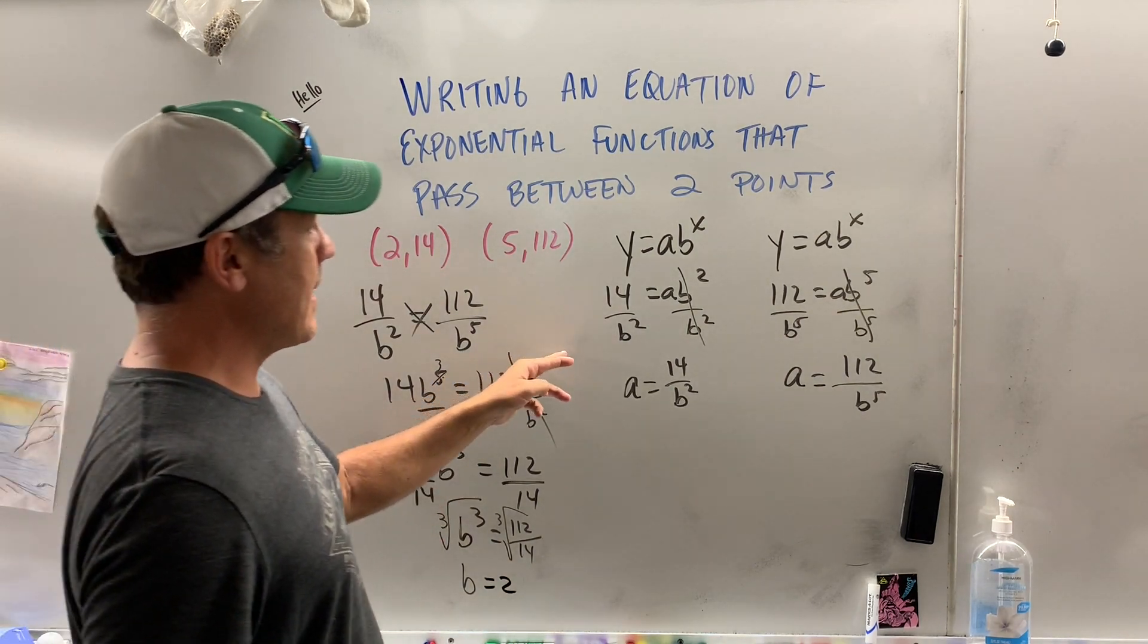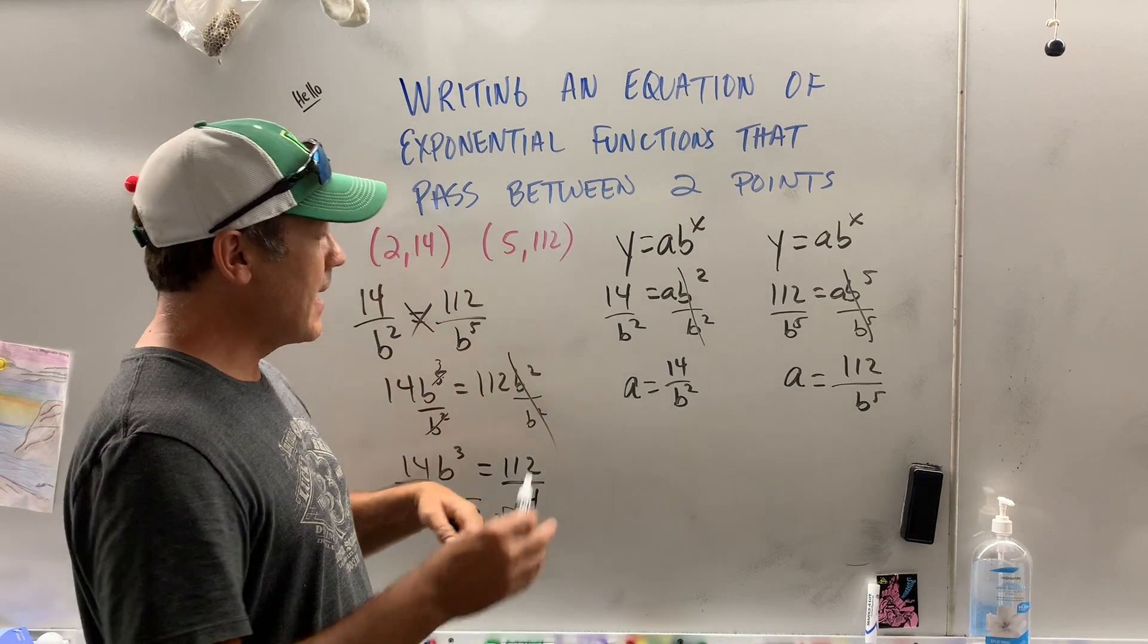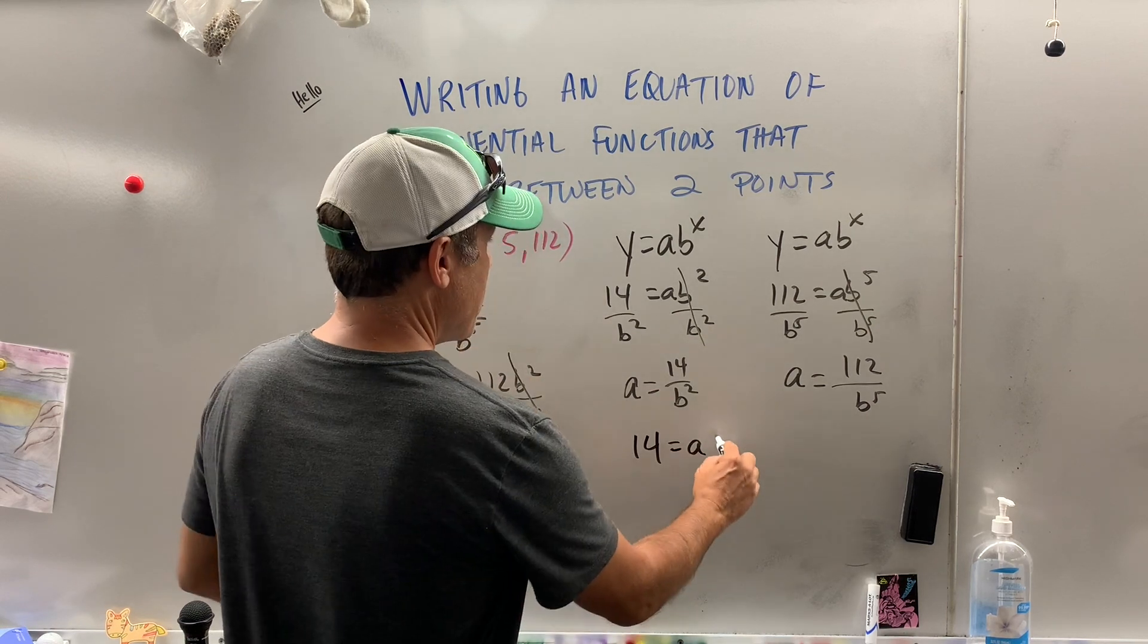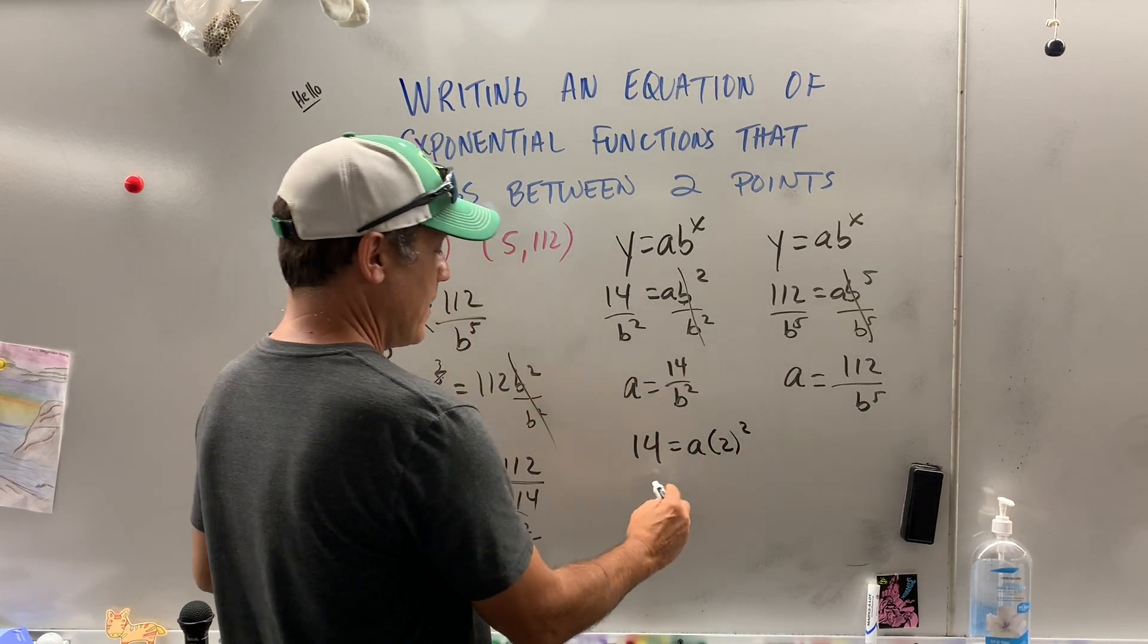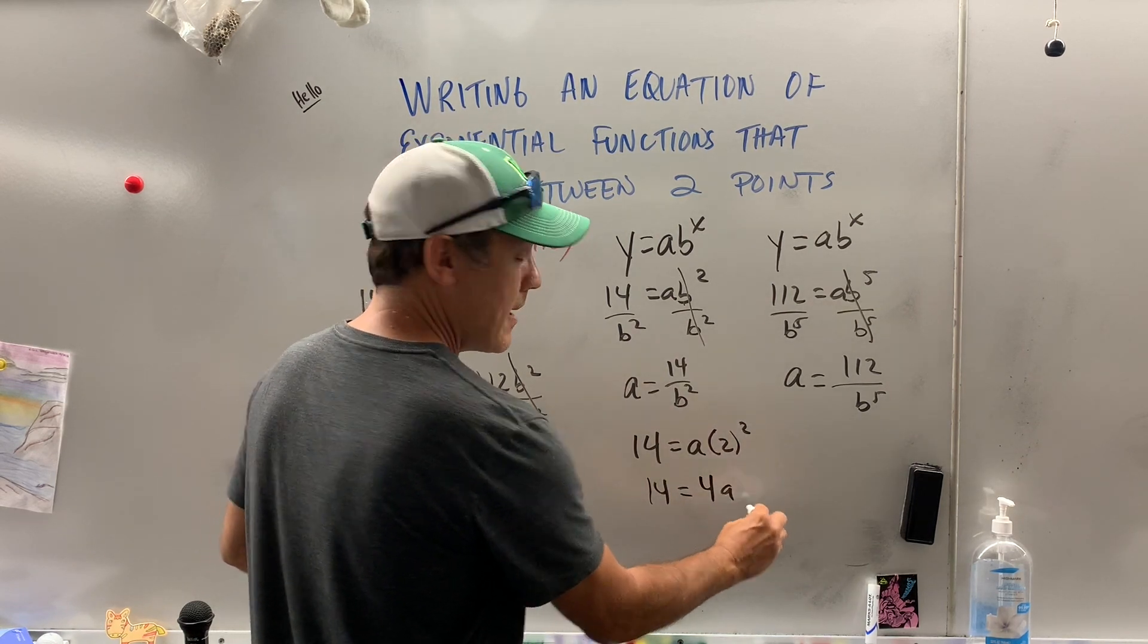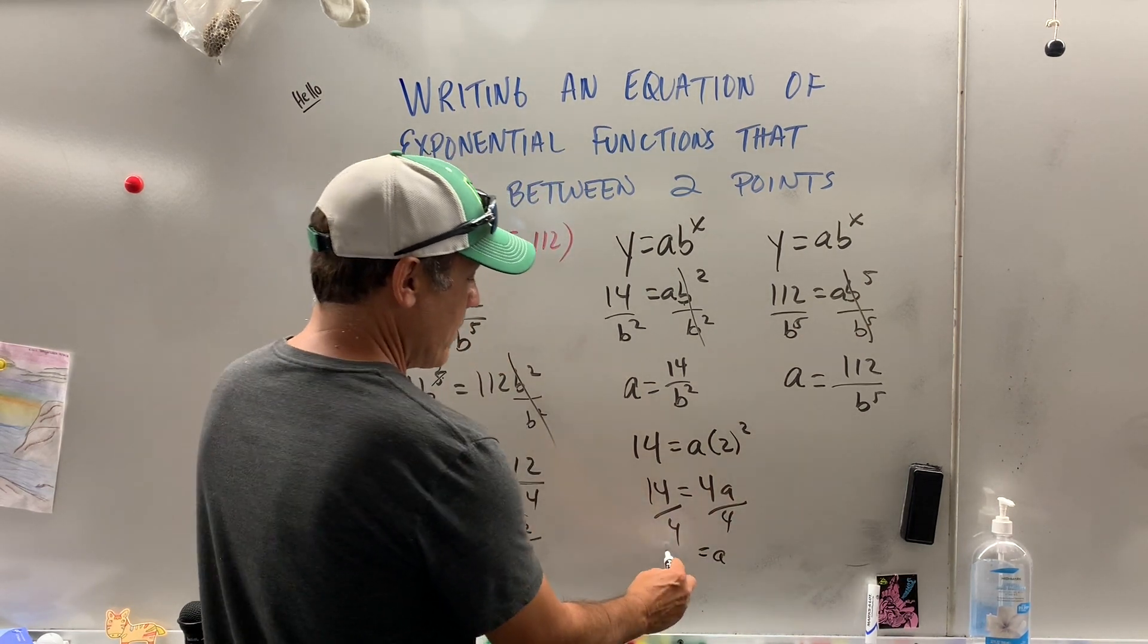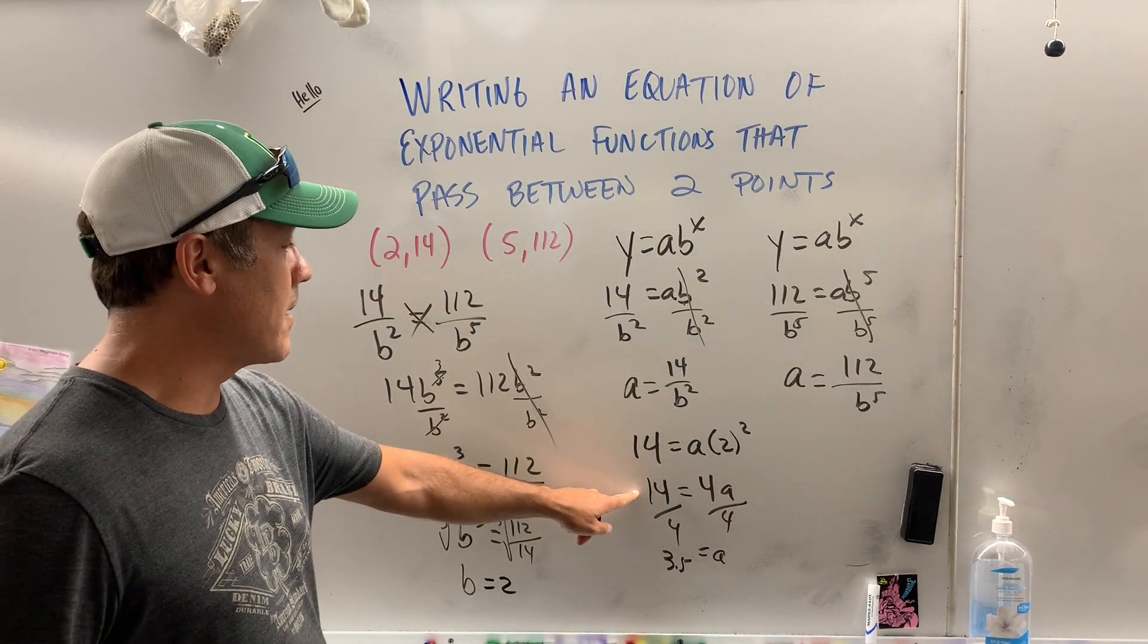So after all that, b equals 2. Now we can take b equals 2 into one of these originals and solve to get a. So I think this one looks the easiest. So 14 equals a, my b is 2. Do you see what I did? I just put 2 in there. 14 equals 2 squared is 4a. Divide both sides by 4. a equals 7 over 2, which is 3.5. You can do it on the calculator, it doesn't matter.